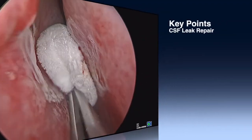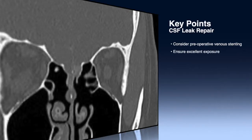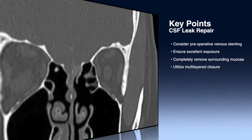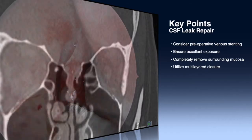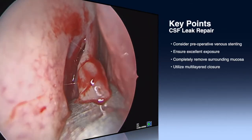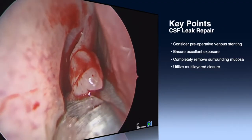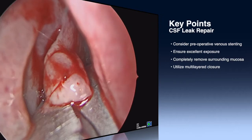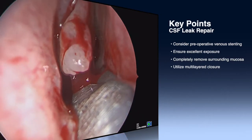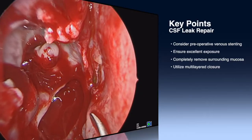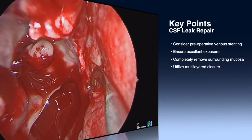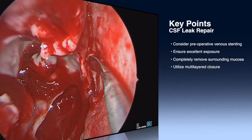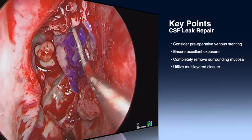Key points for an endoscopic spontaneous CSF leak repair include: preoperative workup may include a CT venogram to ensure there is no stenosis of the venous sinuses, and if stenosis is identified, consider stenting preoperatively to optimize outcomes of the repair. Determine whether endoscopic sinus surgery should be included to get good access and excellent exposure for your repair. Complete removal of mucosa surrounding the leak will ensure post-operative healing, and a good multi-layer closure — which may include a dural substitute as well as mucosal coverage in various forms — will ensure good healing.